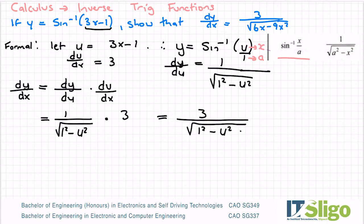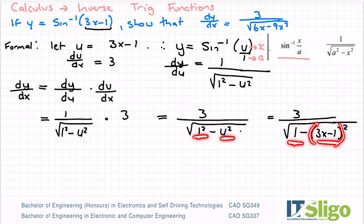So what I'm going to do now is I'm going to sub back in for u. Because remember, we just used u as a placeholder for 3x minus 1. So let's put our 3x minus 1 back in where u is. So it's 3 over the square root of 1 squared is 1 minus u is 3x minus 1, all to be squared. So what did I do there? I squared the 1 squared to give me 1. And I just subbed back in the u. And I have it in a bracket, obviously, because it's squared and because there's a minus here.